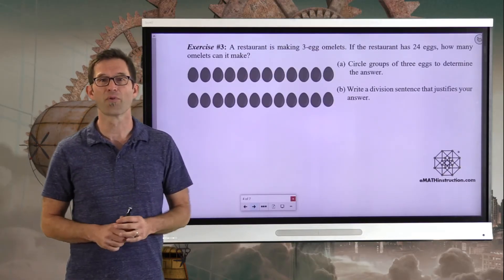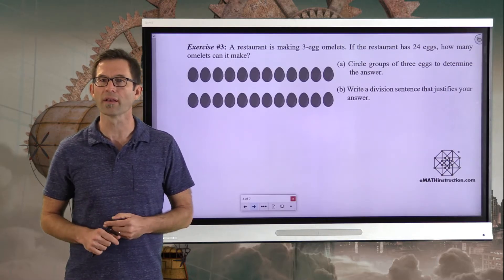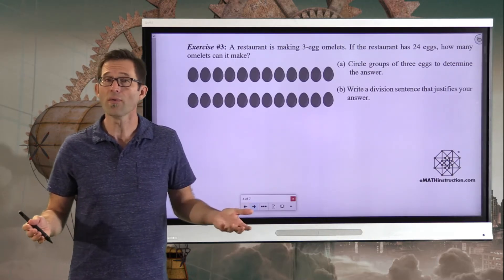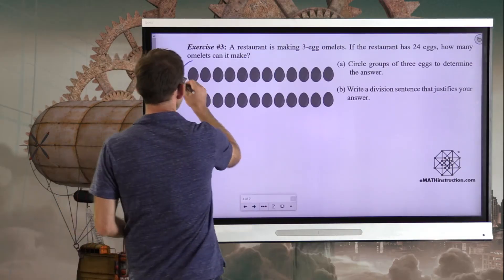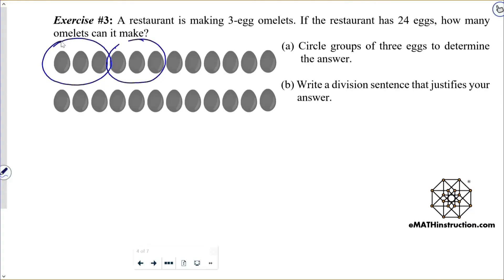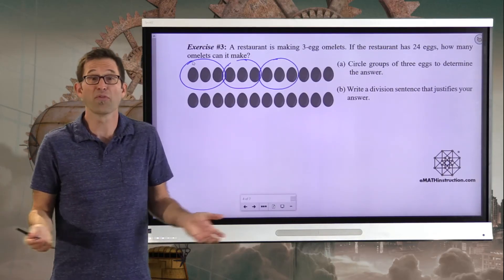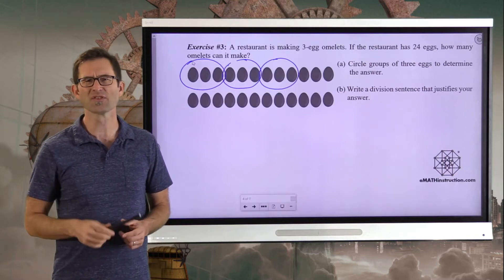Let's move on to that problem. Exercise number three, a little bit of the meaning of division. A restaurant is making three egg omelets. If the restaurant has 24 eggs, how many omelets can it make? Letter A asks us to circle groups of three eggs to determine the answer. So do that. Like, literally come in and just be like, all right, well, okay, here's an omelet. And here's an omelet. And here's an omelet. Et cetera. Go ahead and do that. Finish off the circling and whatnot to figure out how many three egg omelets they can make. Take just a moment to do that.